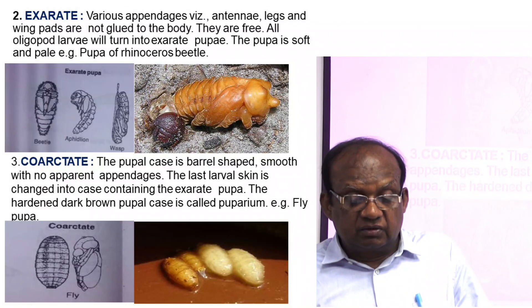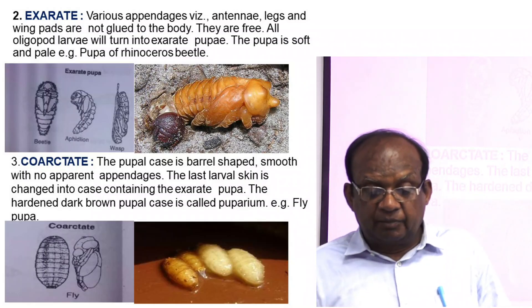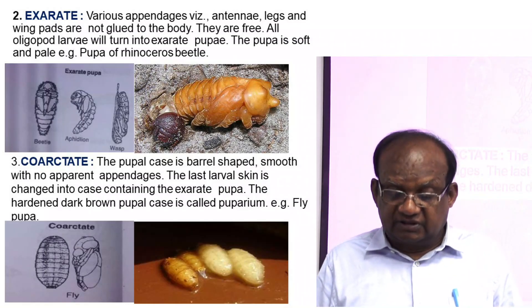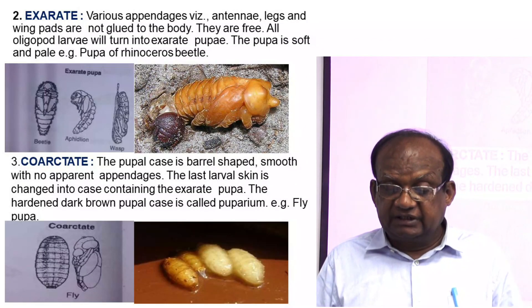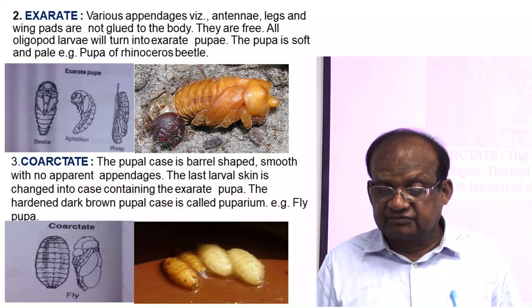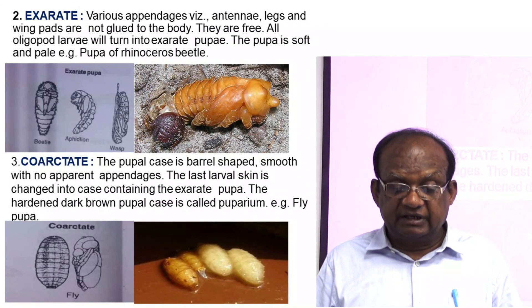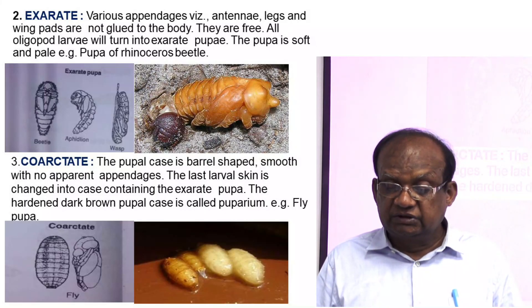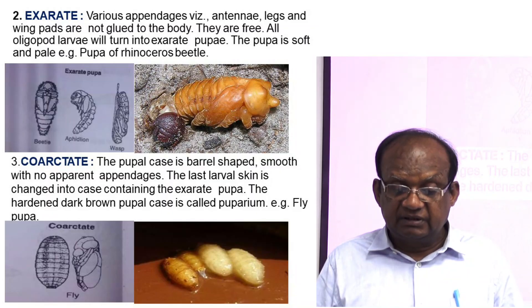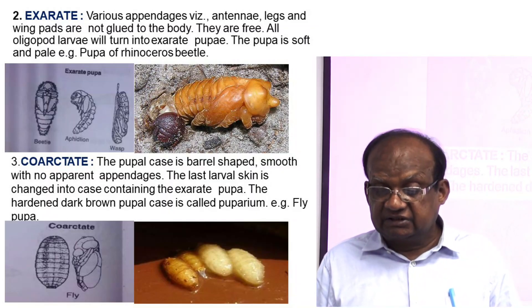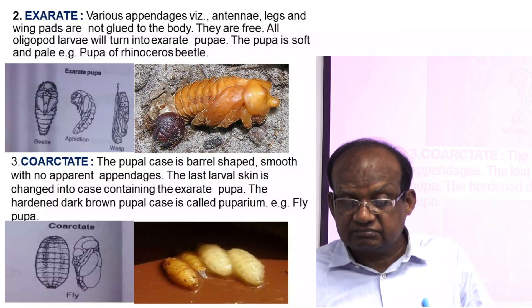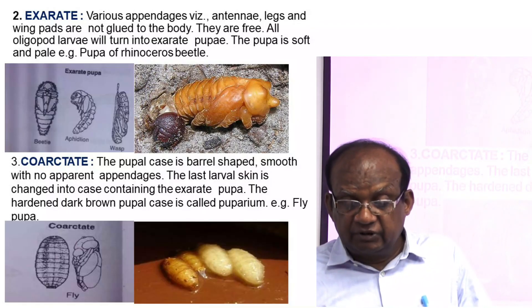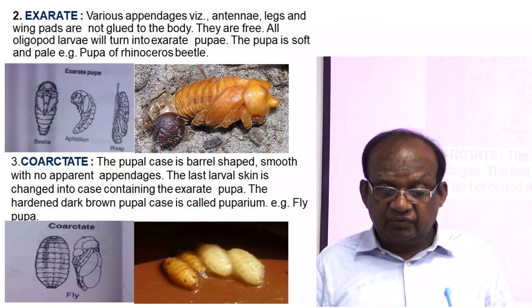The third type is coarctate pupa. In this case, the pupal case is barrel-shaped, smooth, with no apparent appendages. The last larval skin is changed into a case containing the true pupa. The hardened, dark brown pupal case is called the puparium. An example is the pupa of a fly.